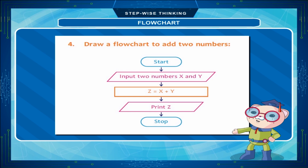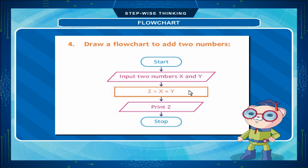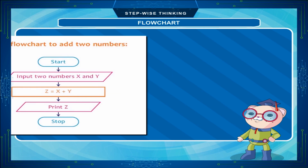Example 4: Draw a flowchart to add two numbers. Start → Input two numbers X and Y → Z = X + Y → Print Z → Stop.